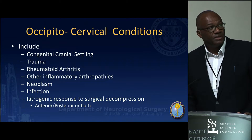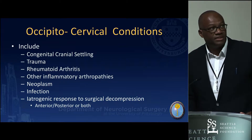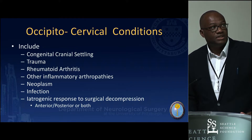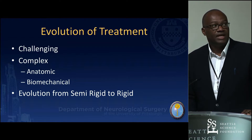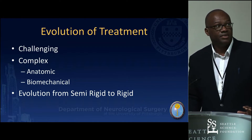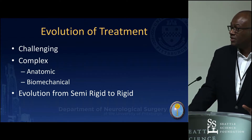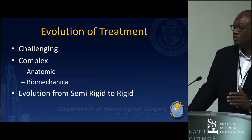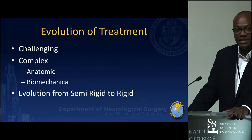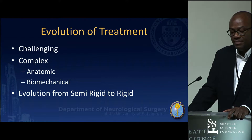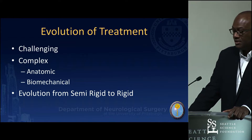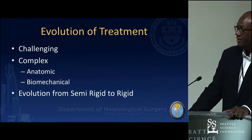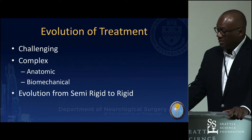Conditions that may affect the occipital cervical region include trauma, rheumatoid arthritis, and inflammatory lesions. Treatment has evolved over time, but it remains a complex anatomical and biomechanical region. The evolution has gone from semi-rigid to now only rigid fixation. This is the last bastion of open surgery in spine surgery, but I don't think it'll last long with advances in technology.